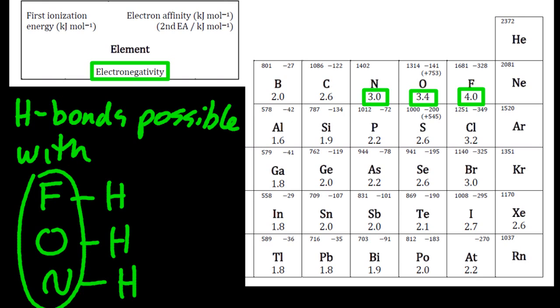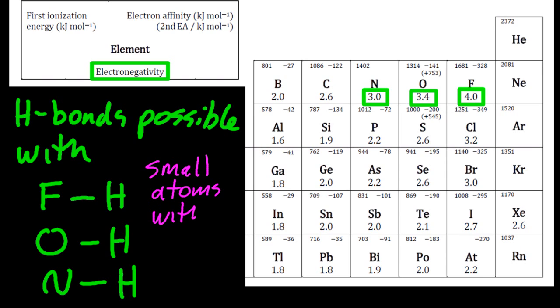So why doesn't chlorine count? Well, it's only small atoms with a high electronegativity. And so chlorine's a little too big to allow hydrogen bonds to be formed.